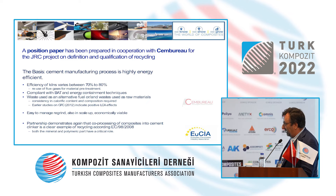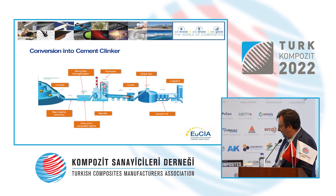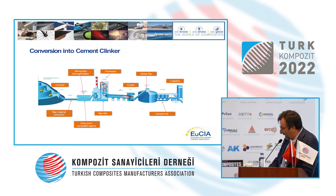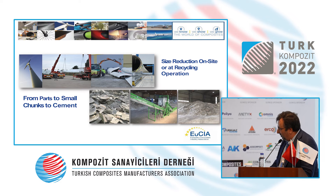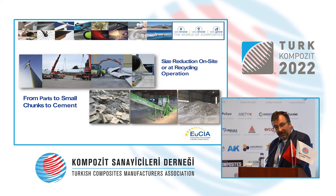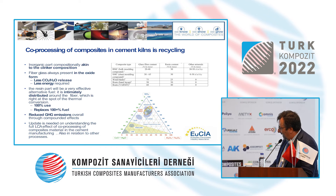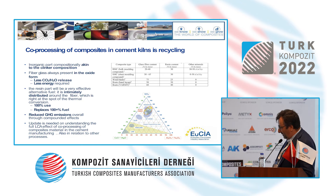The cement kiln process is highly energy efficient and carbon compliant. Composite waste is fed into the preheater at the beginning of the cement kiln and used to produce clinker. Wind blades, for example, are cut into sections, ground to near-powder size, and fed into the cement kiln for production without any problem.